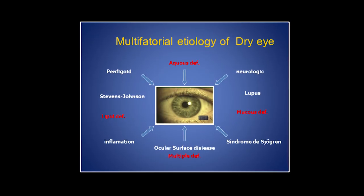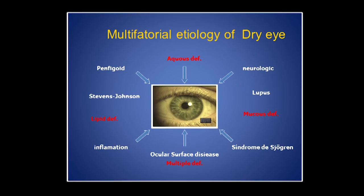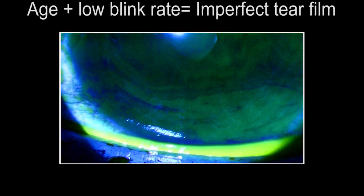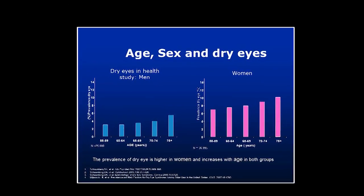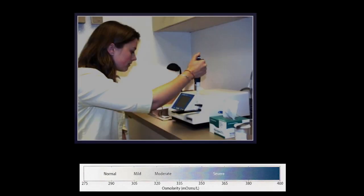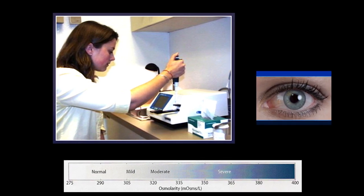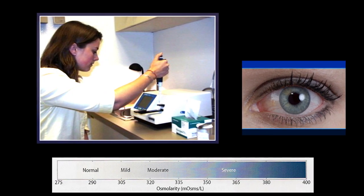The physiopathology is multifactorial and generally arises from an imperfect tear film, degenerated by age and aggravated by the low rate of blinking, mostly in women. An imperfect tear film leads to hyperosmolarity, which in turn inflames the ocular surface, producing the symptoms of discomfort mentioned.